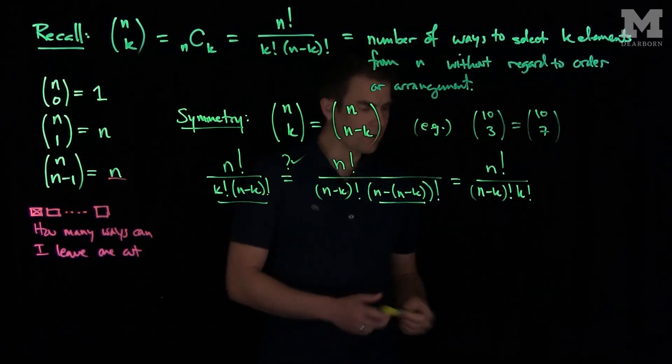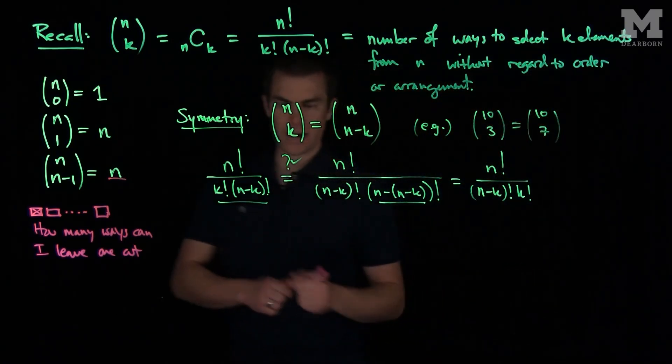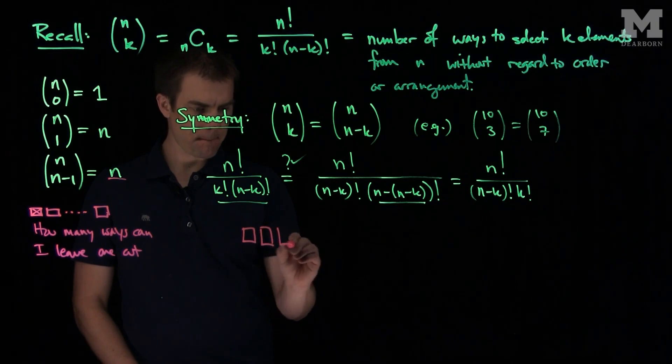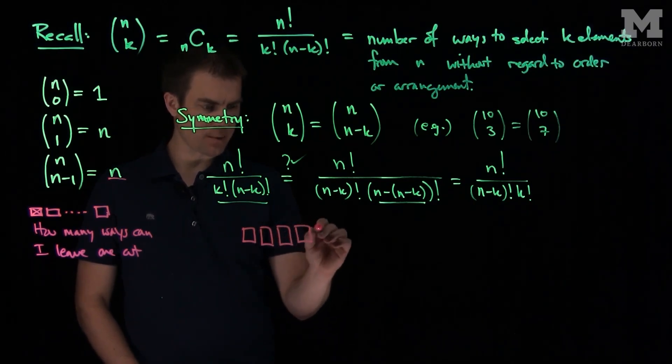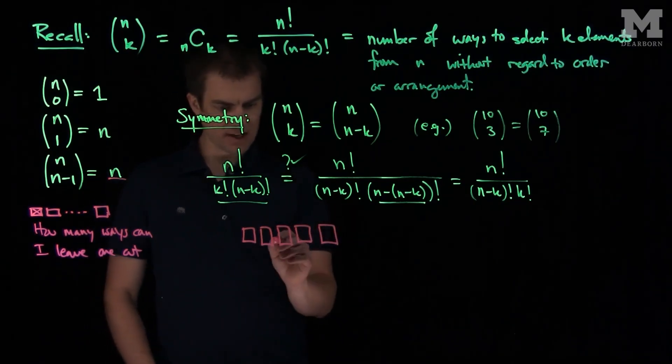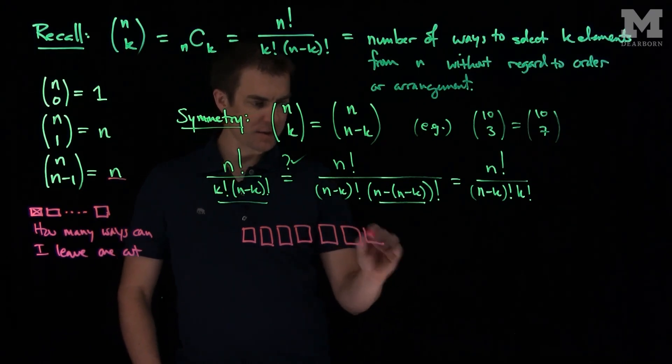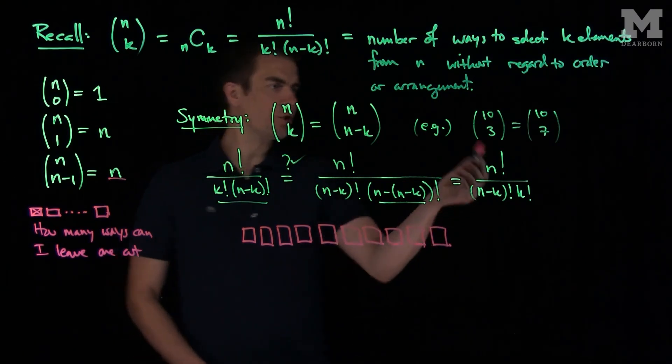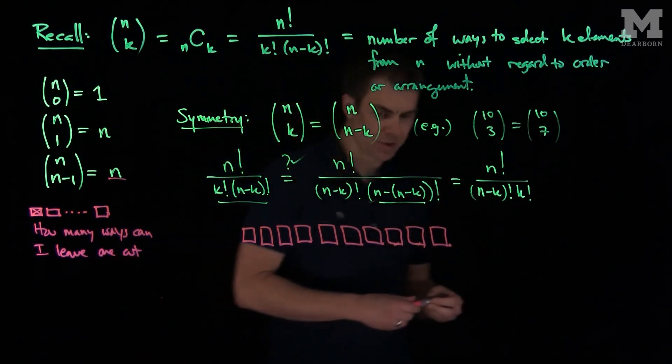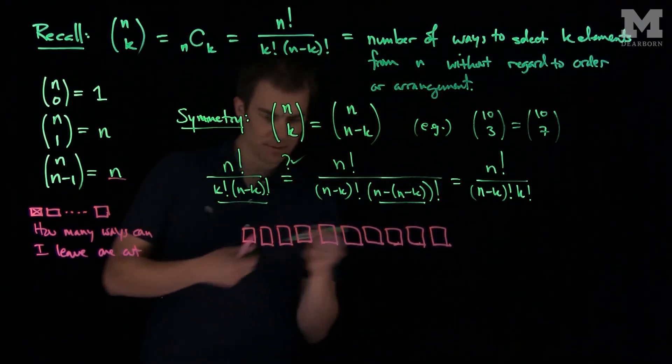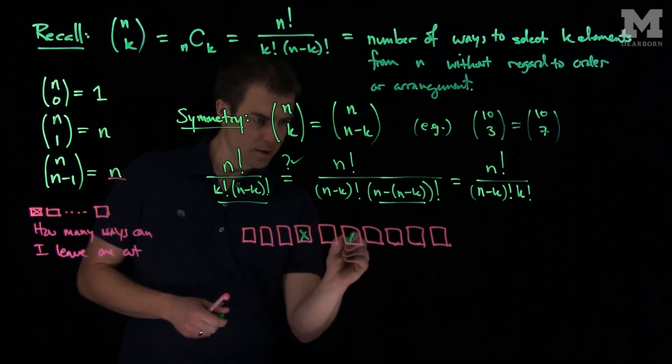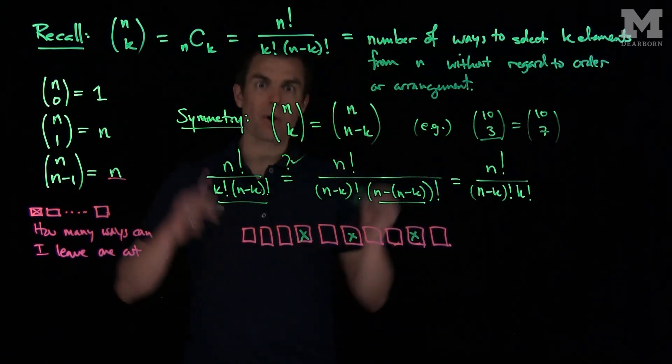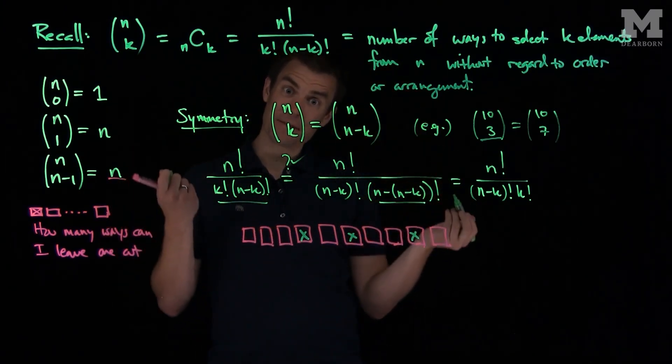If I have a set of n elements, let's do a particular example. Let's do our 10 example, so we have 1, 2, 3, 4, 5, 6, 7, 8, 9, and 10, and I wish to choose 3 of them. So once I choose 3 of them, let's pick those out: 1, 2, and 3.